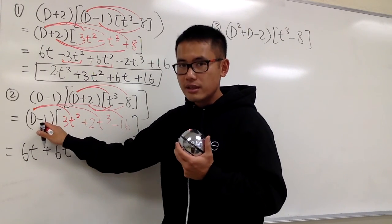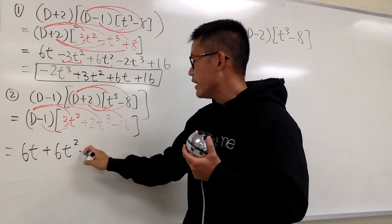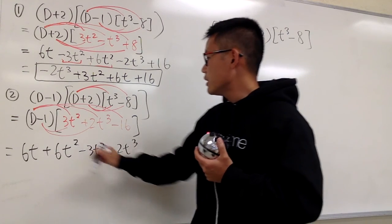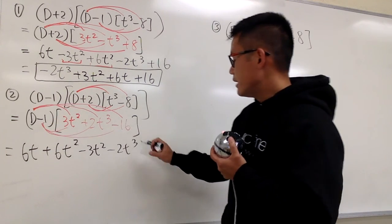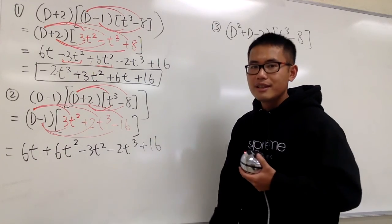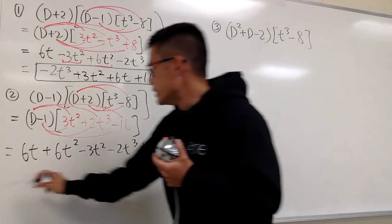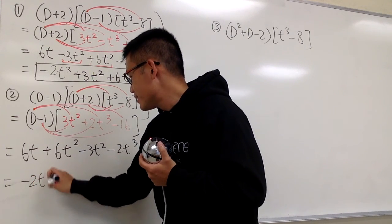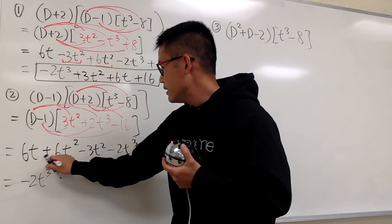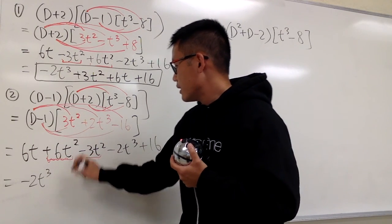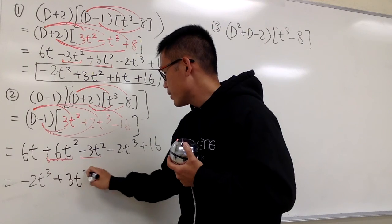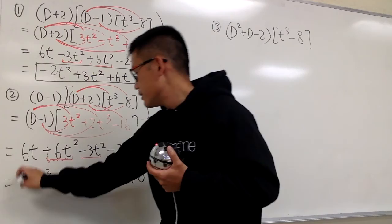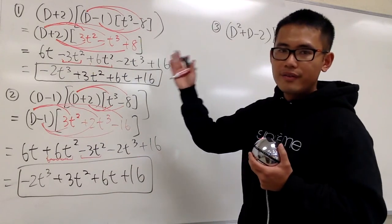The negative 1 multiplies: negative 1 times 3t² is negative 3t², negative 1 times 2t³ is negative 2t³, and negative 1 times negative 16 is plus 16. Combining everything: negative 2t³, plus 3t², plus 6t, plus 16. This is the result for number 2.